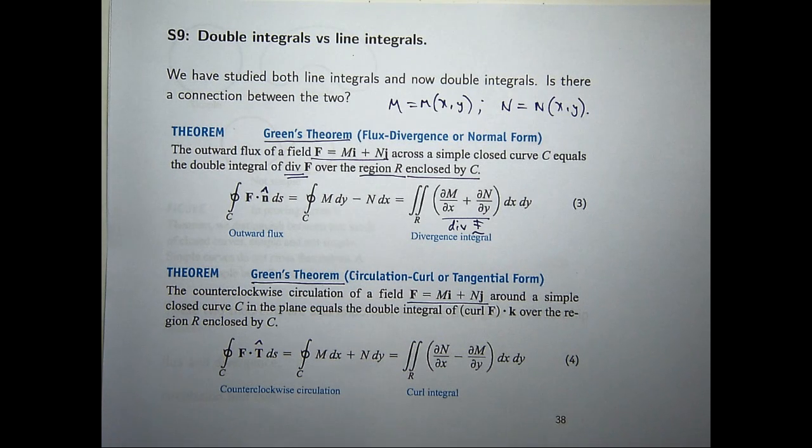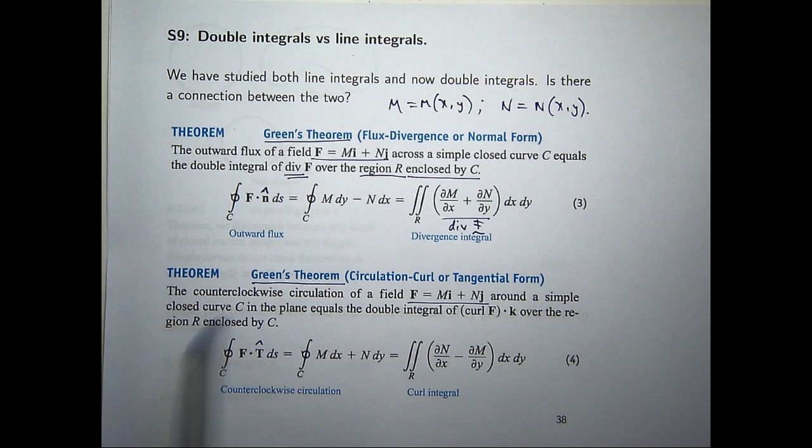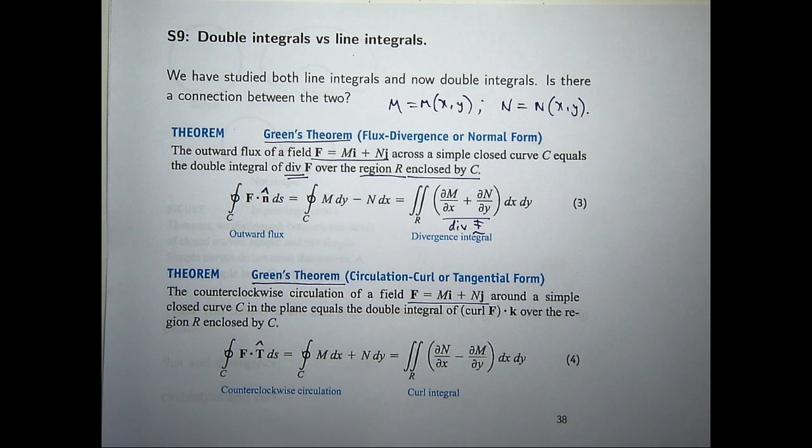Now, I'll show you in a minute how you can use these things to save a lot of time. Sometimes one of the sides is easier to compute than the other. So you might want to compute this, but actually this is a lot simpler. Or you might want to compute this, but this is a lot simpler. Now, before I get to that though, let's delve a little bit deeper into what Green's Theorem is telling us.